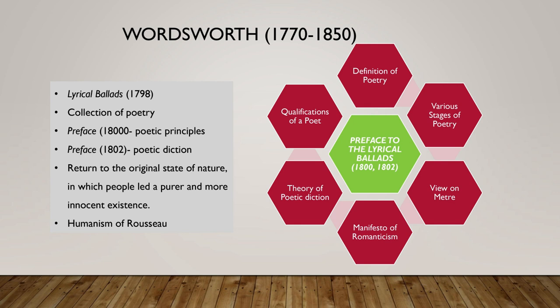Wordsworth's view on the use of meter: he justifies meter for the following reasons. First, meter is an additional source of pleasure — it gives extra pleasure to the reader. Second, it can give pleasure even without the use of poetic diction. Third, it has a restraining effect on both emotion and passion. Fourth, it imparts passion to the word and so increases the emotional intensity.